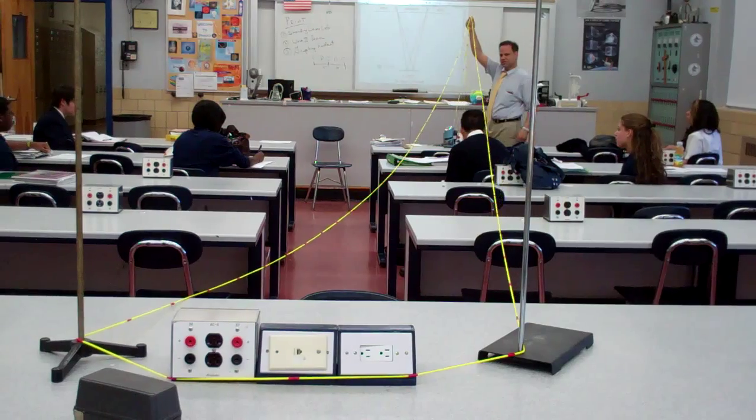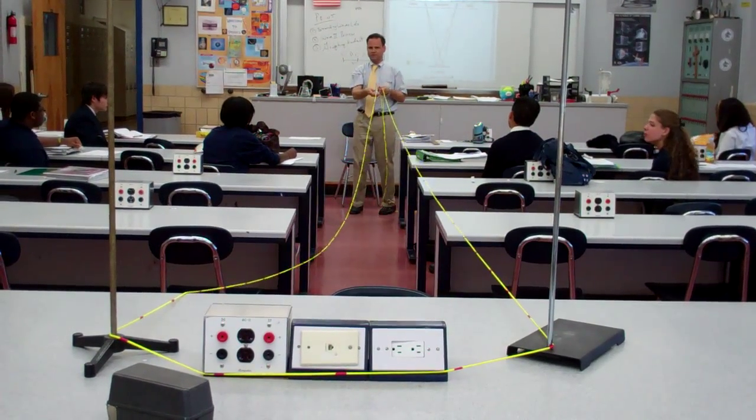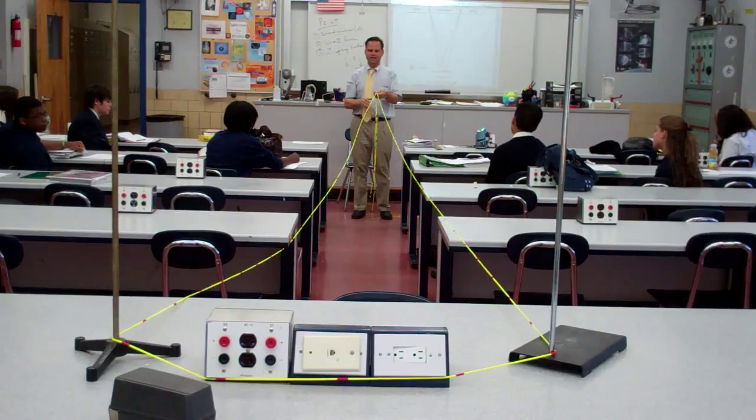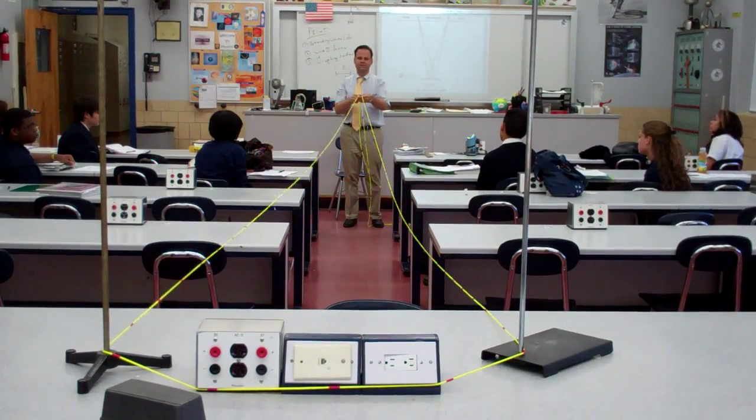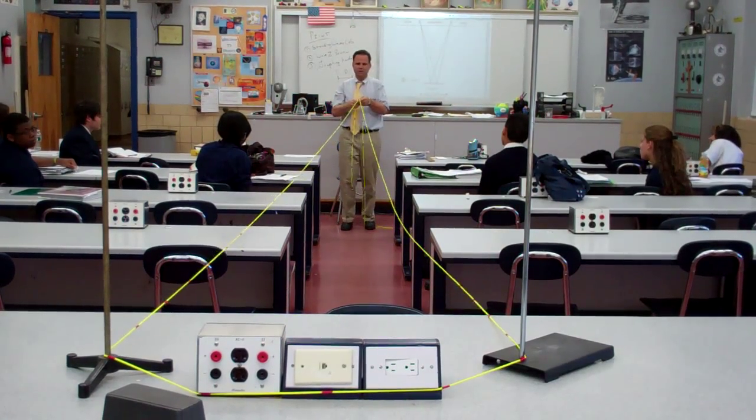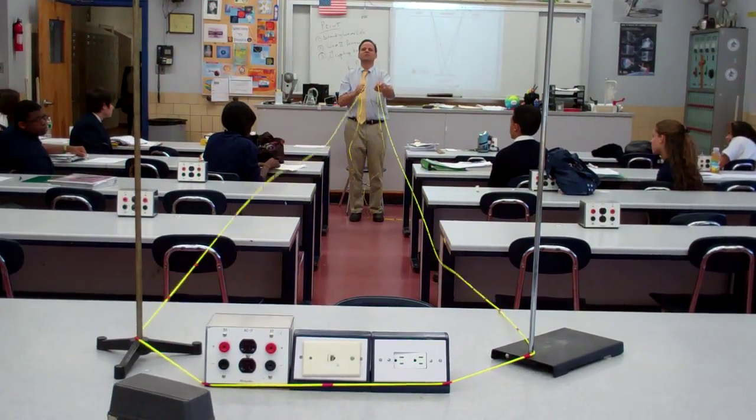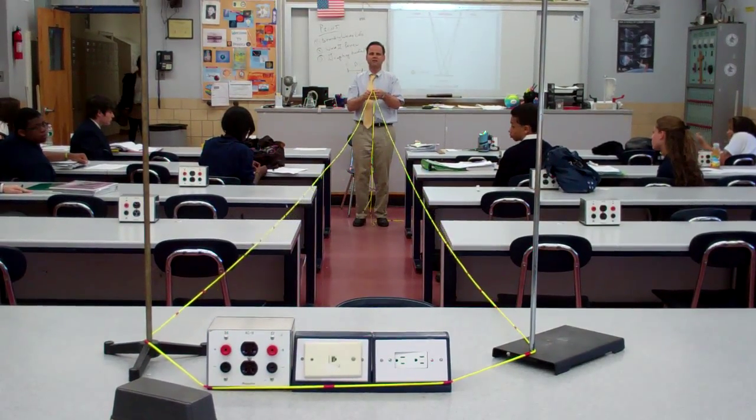Watch. So, when we have light coming from two slits, the middle always has what kind of interference? What kind of interference do we always have in the middle? Constructive. Why? Because there we go. Constructive right here.